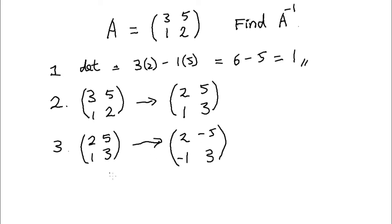Finally put together the DET with the matrix to get 1 over 1 times (2, minus 5; minus 1, 3) to get (2, minus 5; minus 1, 3). That is our inverse matrix.